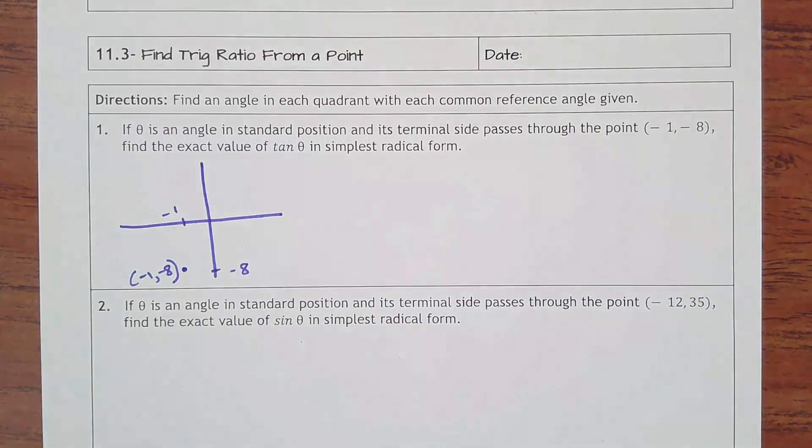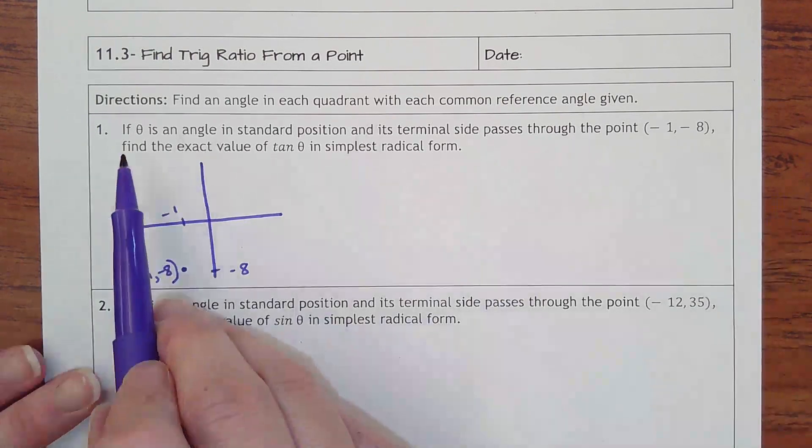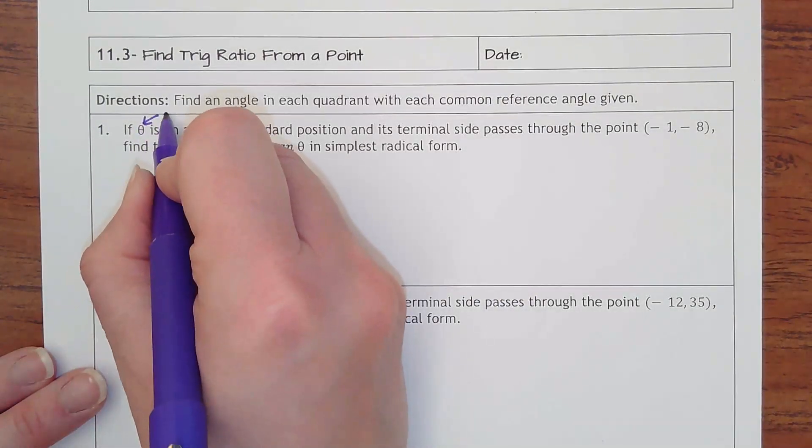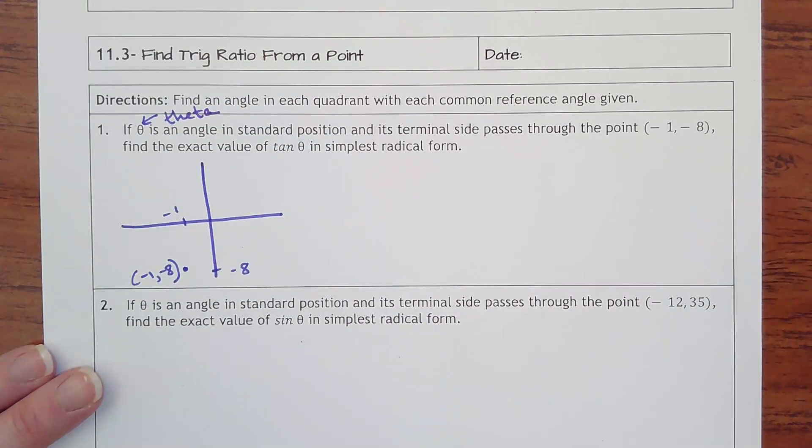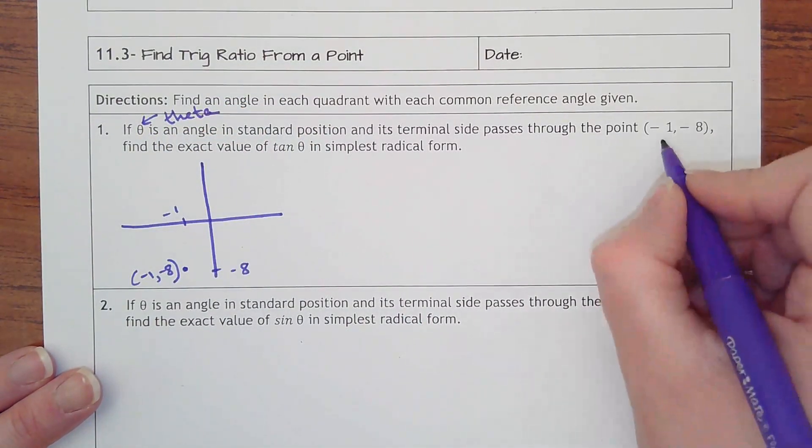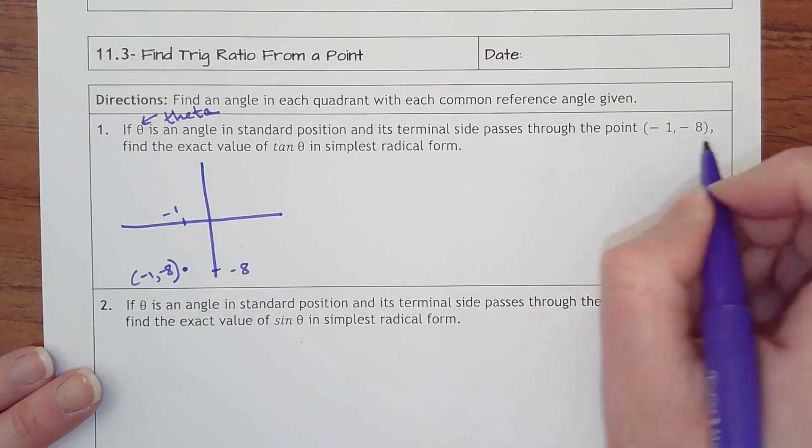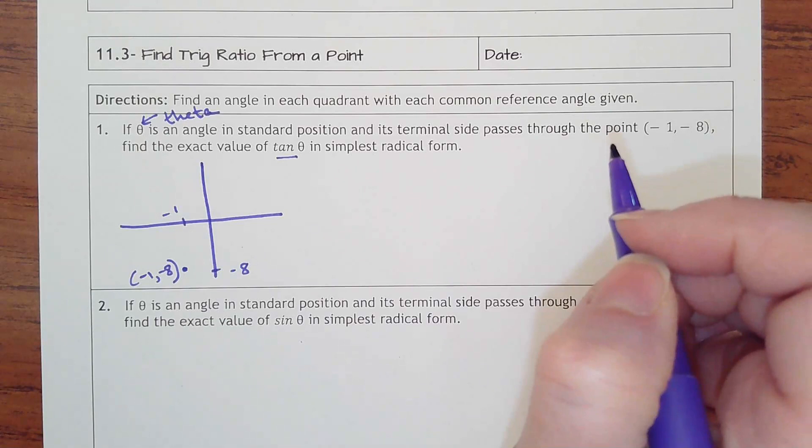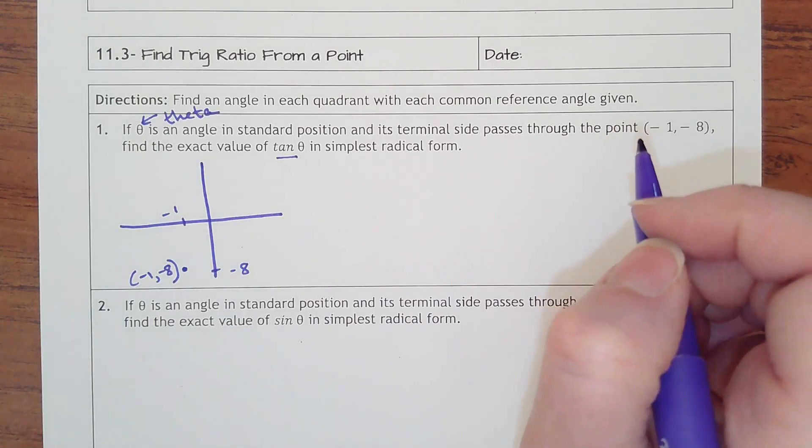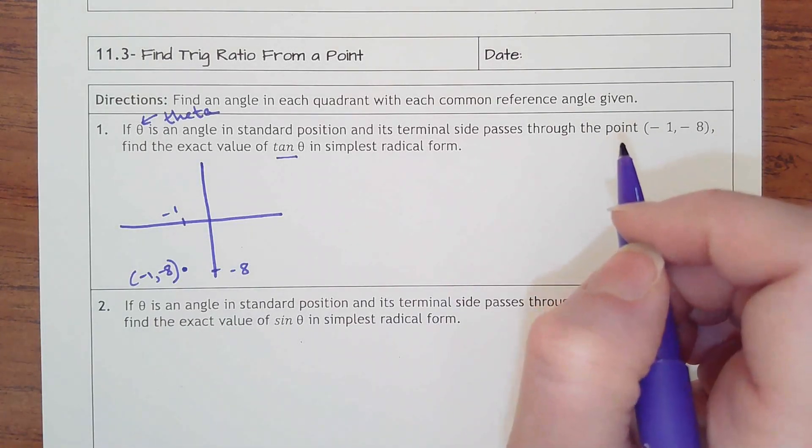Lesson 11.3 is find a trig ratio from a point. Directions: find an angle in each quadrant with each common reference angle given. If theta is an angle in standard position and its terminal side passes through the point (-1, -8), find the exact value of tangent of theta in simplest radical form.